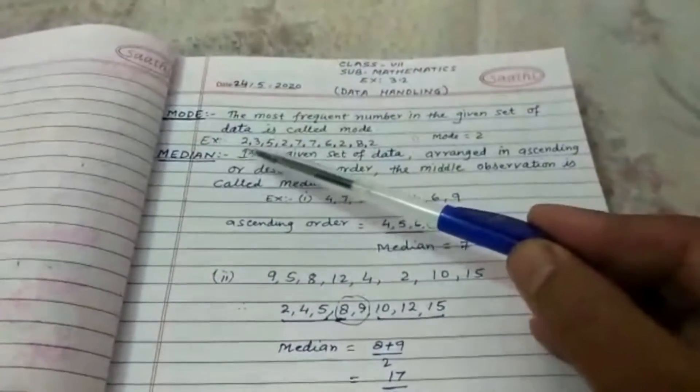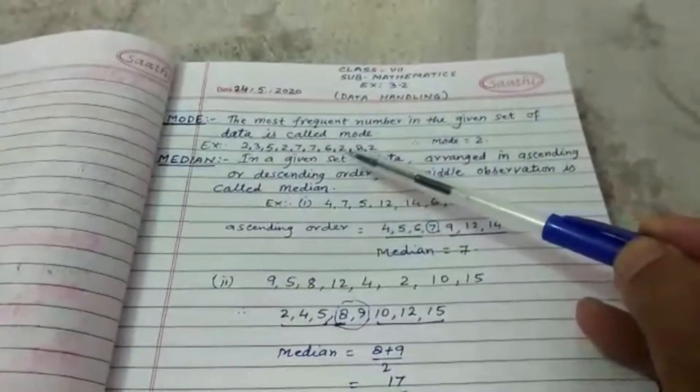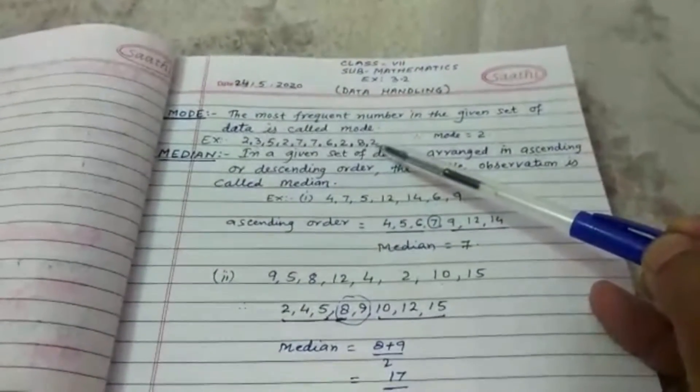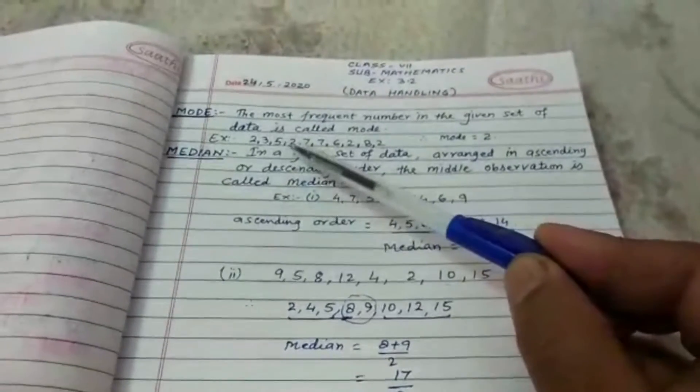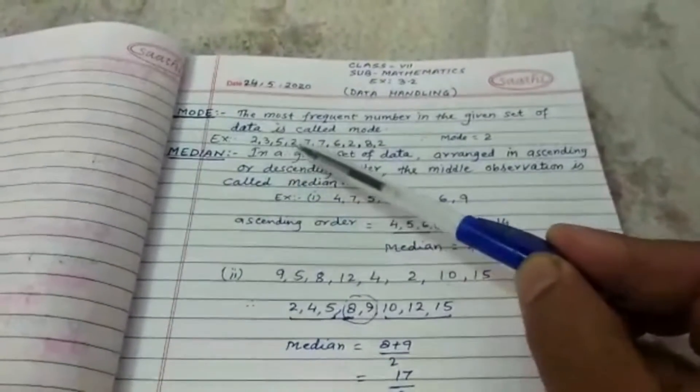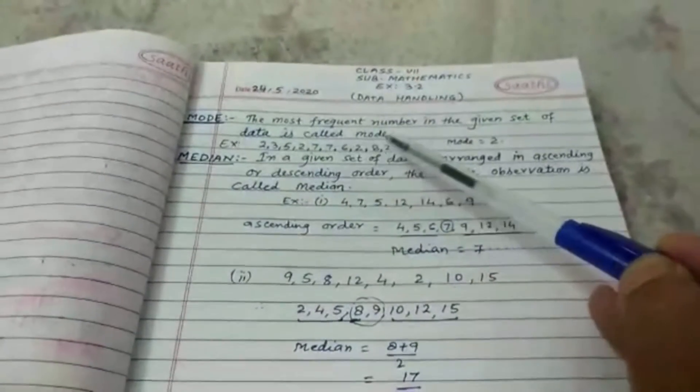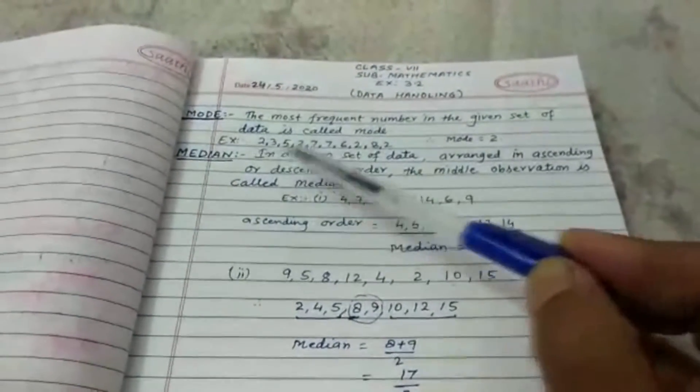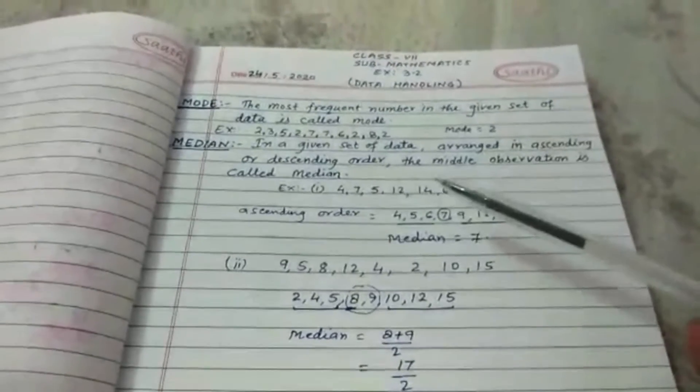Example: 2, 3, 5, 2, 7, 7, 6, 2, 8, and 2. It is clear that the number 2 has the most frequency—1, 2, 3, and 4 times. Because 2 is the most frequent number in this given set of data, therefore mode is 2.